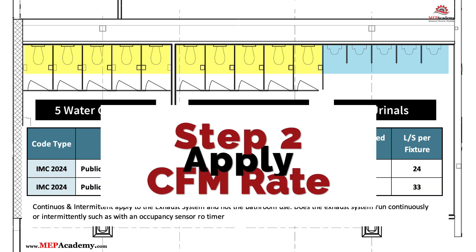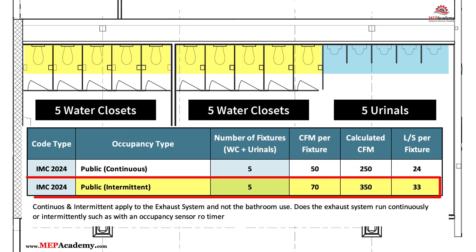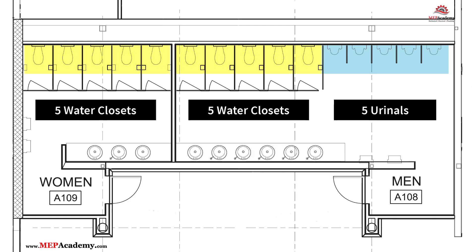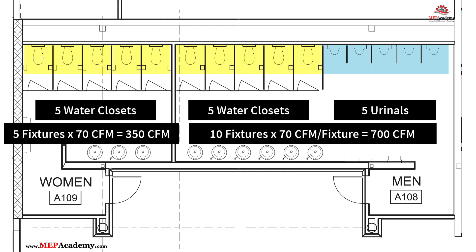Step 2: Apply the exhaust rate. Using IMC 2024 for intermittent operation gives us 70 CFM per fixture. Step 3: Calculate the total airflow. For the men's restroom, 10 fixtures × 70 CFM = 700 CFM required. For the women's restroom, 5 fixtures × 70 CFM = 350 CFM required.